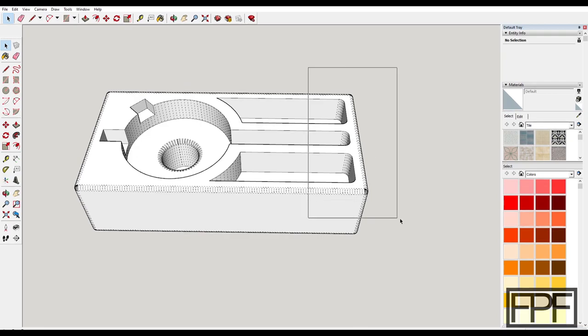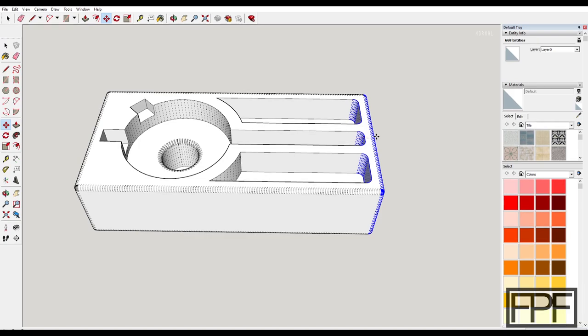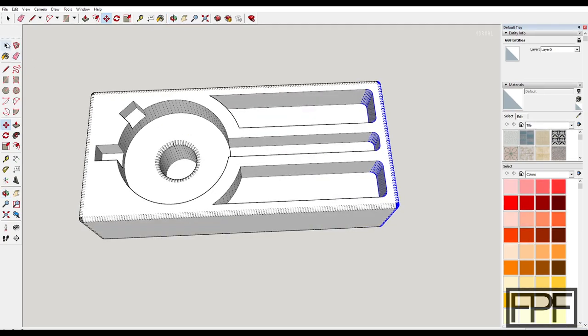In SketchUp, I could simply just select all of the drawing elements on this side. And if I wanted to add 15 millimeters, I just show it. I want to drag in that direction, type in 15, and I'll get exactly 15 millimeters of additional length.